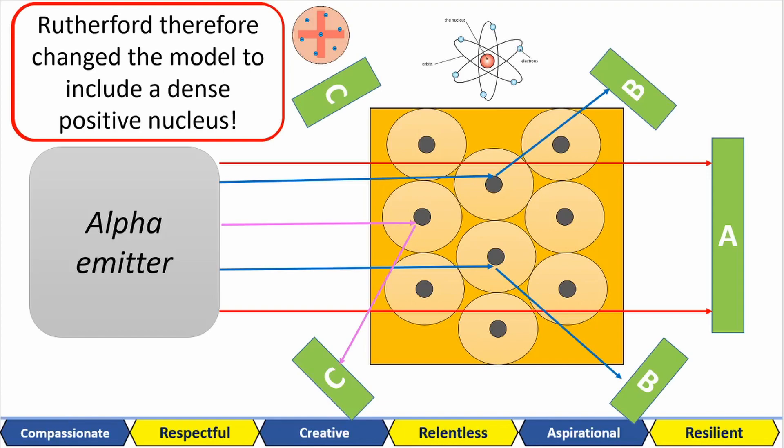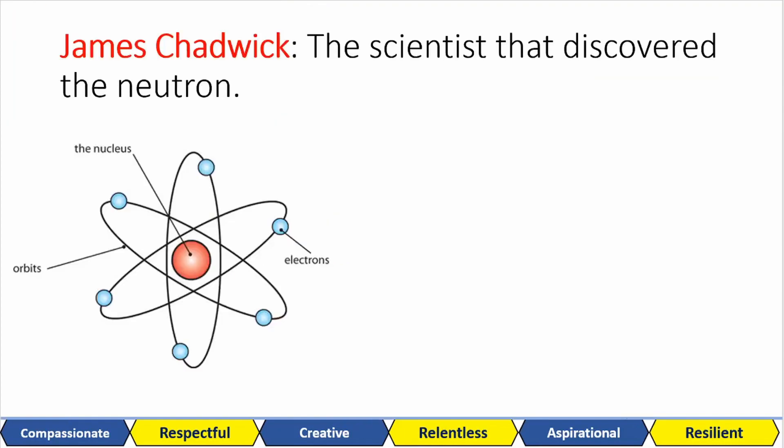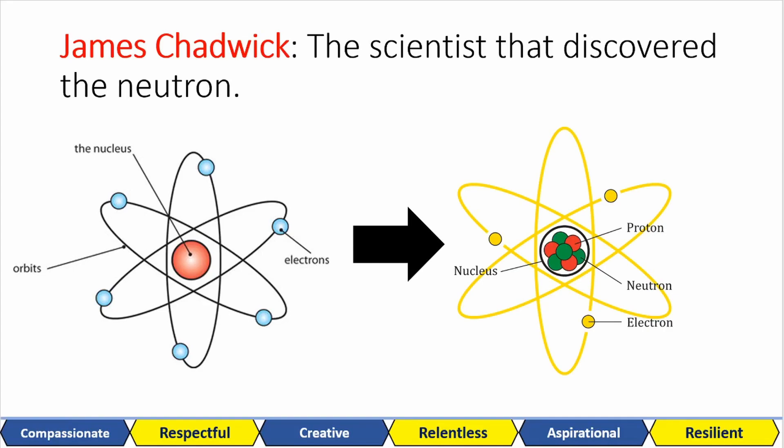This is how the nuclear model was developed, which is a positively dense nucleus with orbiting electrons around it. However, James Chadwick discovered neutrons, so the atomic model went through another change to include neutrons in the model. Now that we've done all of that, let's move on to radiation.